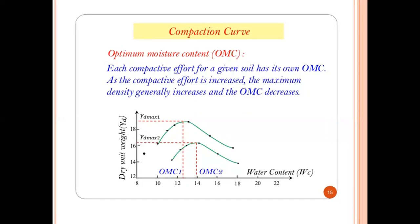As the compactive effort is increased, the maximum density generally increases and OMC decreases. On a graph of water content (x-axis) versus dry unit weight (y-axis), gamma_d maximum occurs at OMC1 for one compactive effort and at OMC2 for another, showing that higher compactive effort yields greater maximum density with a lower optimum moisture content.